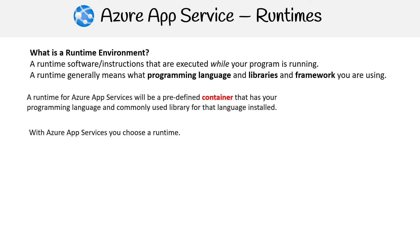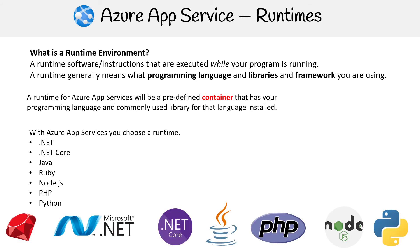The idea is that you're going to choose your runtime — it could be .NET, .NET Core, Java, Ruby (though I'm very disappointed in Azure, because as of shooting this video, they do not support Ruby for Application Insights — but they do have it here in Azure App Services), Node.js, PHP, Python. And there are all the logos, if you like seeing the logos.